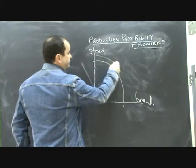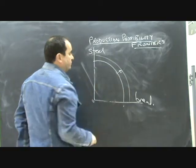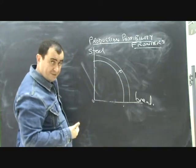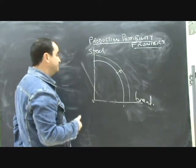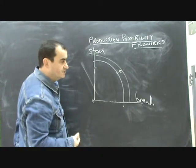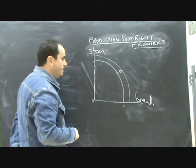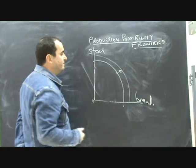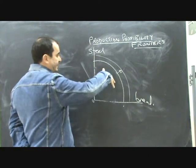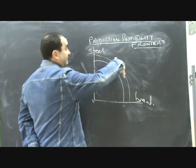But PPFs can also shift outwards as resources get better or get more plentiful. So if there is more land, if there is more labour, the population increases, if there is better labour, the population becomes more skilled, then the potential output of the economy will increase and the PPF will shift outwards.